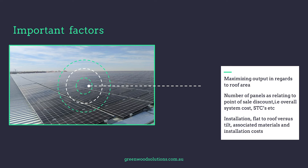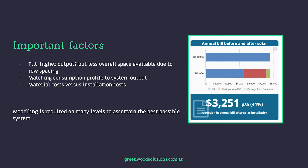Some important factors include maximising the output in regards to the roof area, the number of panels as related to a point-of-sale discount and the overall system cost, the STCs, and the installation flat to the roof versus tilt with associated materials and installation costs. The higher the tilt, usually the higher the output, but the less overall space available due to row spacing. We have to match the consumption profile to the system output.